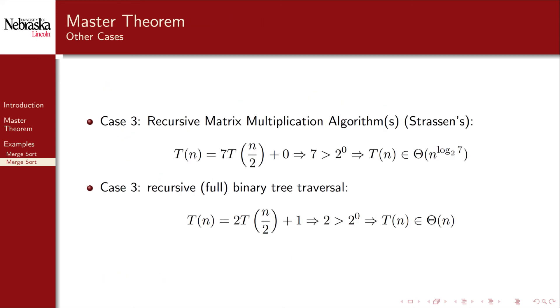Both examples resulted in us using the case 2 of the master theorem. But the other cases do come up. For example, Strassen's fast matrix multiplication algorithm makes seven recursive calls on inputs about half the size with no non-recursive work. Another example of case 3 coming into play is a recursive full binary tree traversal. The first case is not as common, but it can happen.